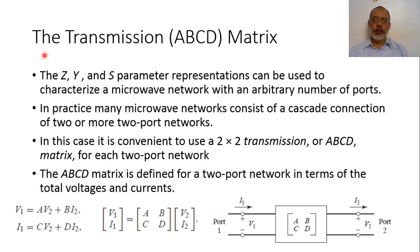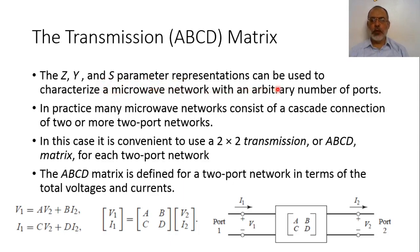For all these matrices, the microwave network can be a one-port network, two-port network, or in general, an n-port network. The impedance matrix Z, the admittance matrix Y, and the scattering matrix representation can be used to characterize microwave networks with an arbitrary number of ports, starting from 1 to n.